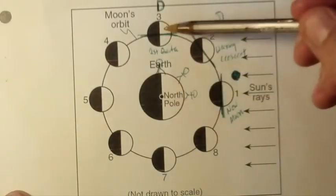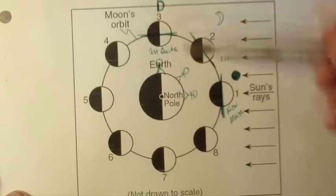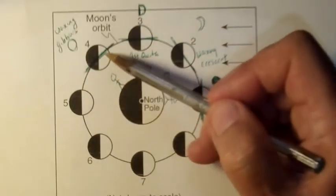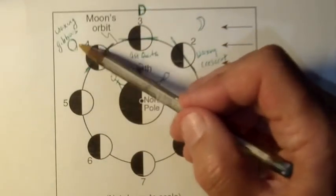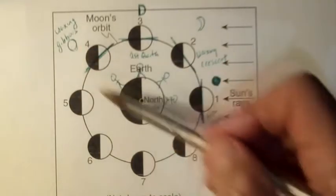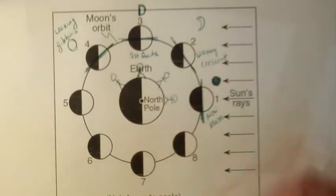At position number three, we'd see half the moon lit up. This is called the first quarter moon. It would look like that. At position number four, we'd see that the moon is getting close to being circular in appearance, a little bit is missing to the left. Waxing gibbous.